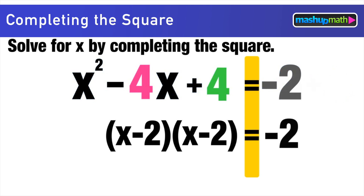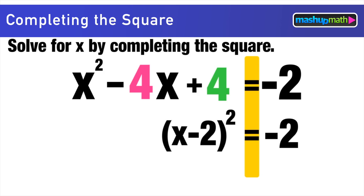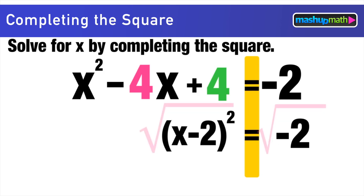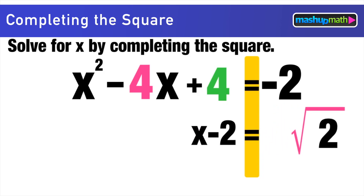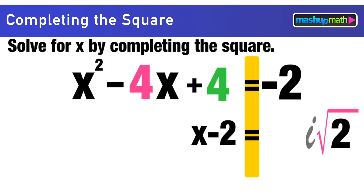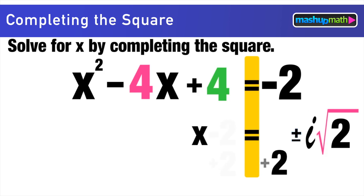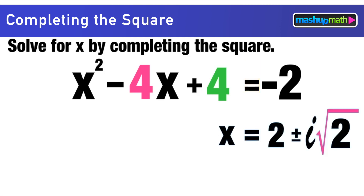On the right side, -6 + 4 = -2. We rewrite (x-2)² = -2, then take the square root of both sides. The square root and exponent cancel on the left. On the right, we have a negative under the square root, so this involves imaginary numbers. We pull out i and write ±i√2. Adding 2 to both sides gives x = 2 ± i√2.